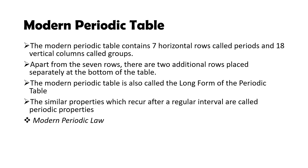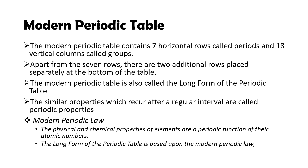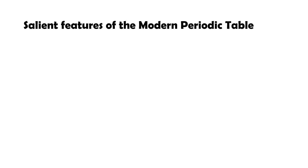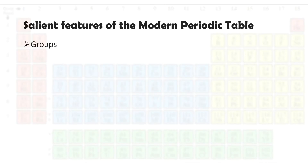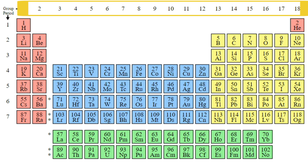The modern periodic law states that the physical and chemical properties of elements are a periodic function of their atomic numbers. The long form of the periodic table is based upon the modern periodic law. The modern periodic table has 18 vertical columns known as groups arranged from left to right.